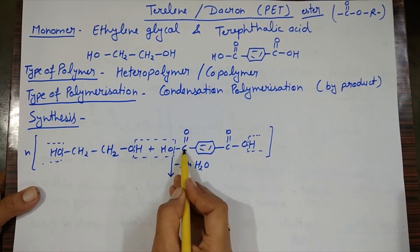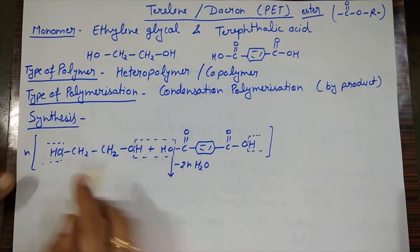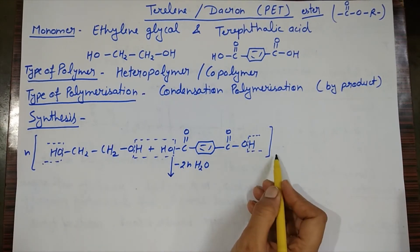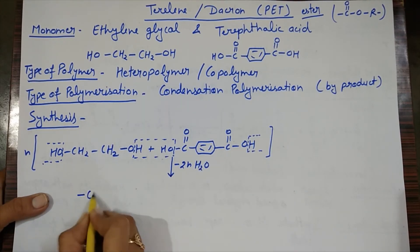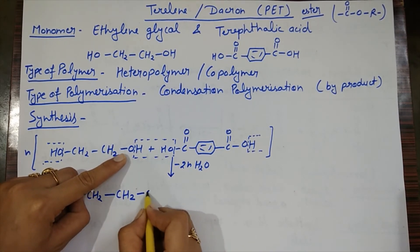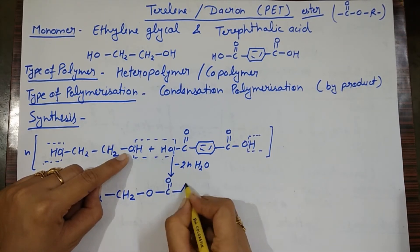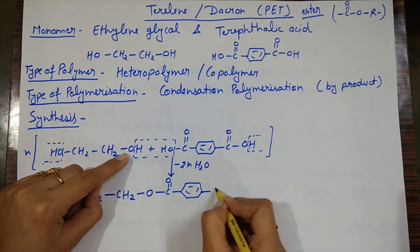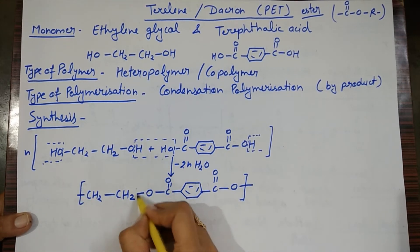The units that are eliminated form the water molecule. The portion we have represented with the dotted line, we will remove it. Then we will attach the rest. So here we have -CH2-CH2-O-C(=O)-benzene-C(=O)-O-. This linkage C-O-O is the ester linkage.